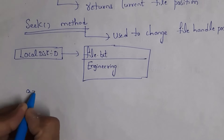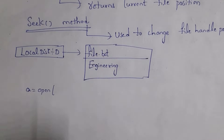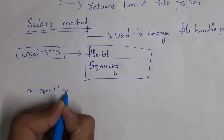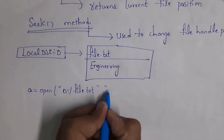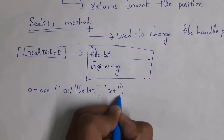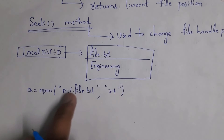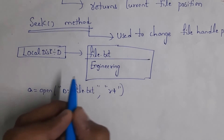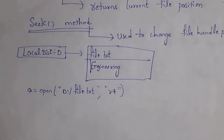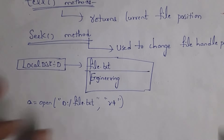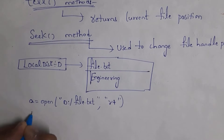So here, a is the object. a = open. Inside the open function, I need to open this file. In quotations write 'd:/file.txt', with r+ mode, where r+ is used to perform both read and write operations. It will open file.txt and whenever it opens this file, the cursor is at the first position. The tell method is used to identify the current file position. My cursor is at the first position, so I want to find the cursor position.